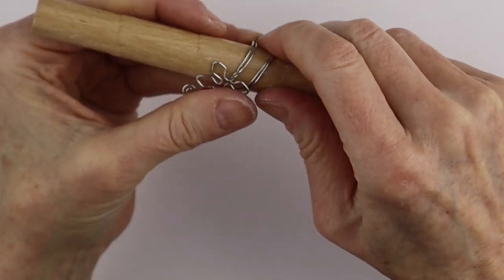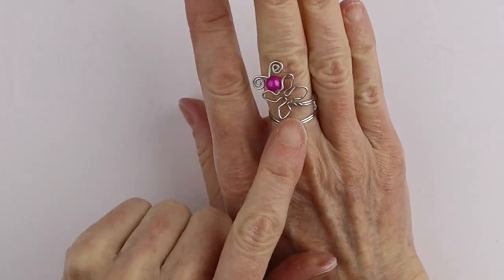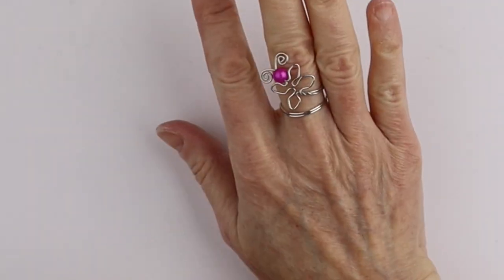So now we'll put it back on the ring cone. Adjust it around. Tilt it up a little bit if you want. You can definitely make the butterfly smaller. But that's the idea for an adjustable butterfly ring.